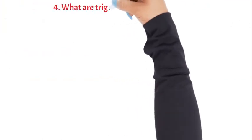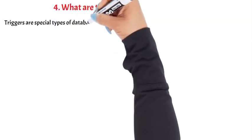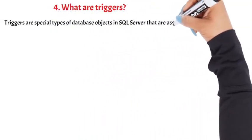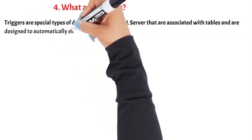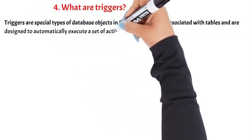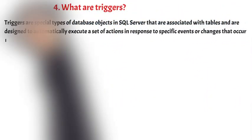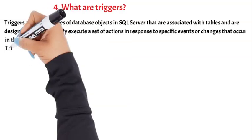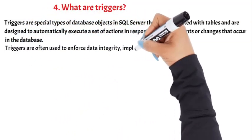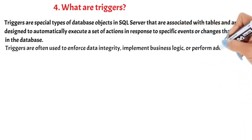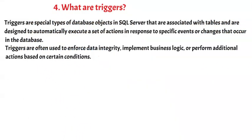Question 4: What are triggers? Triggers are special types of database objects in SQL Server that are associated with tables and are designed to automatically execute a set of actions in response to specific events or changes that occur in the database. Triggers are often used to enforce data integrity, implement business logic, or perform additional actions based on certain conditions.